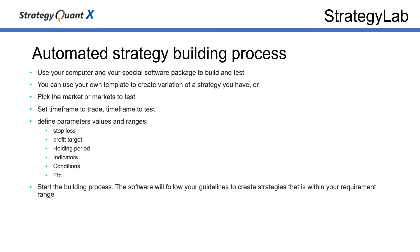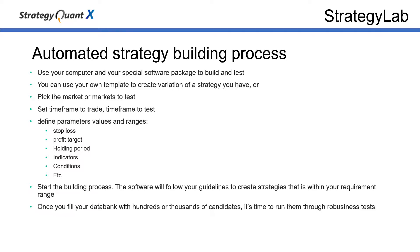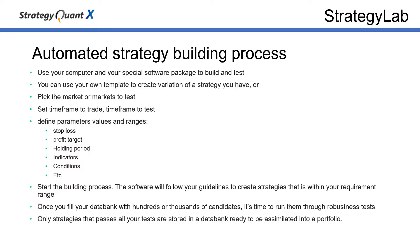Once you press start, the software will begin building strategies following your guidelines. When you have enough strategies in your data bank, you run them through very hard robustness tests to make sure they are of high quality. Only the strategies that pass all tests will be fit to be included in a portfolio. When all done, you export the strategy code to be traded on a demo or live account. This process is called genetic algorithm building, and uses the power of your computer to search for trading ideas instead of you.